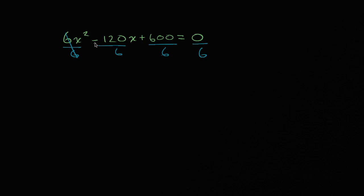On the left-hand side, I am going to be left with x². And then -120 divided by 6, that is, let's see, 120 divided by 6 is 20. So that's -20x. And then 600 divided by 6 is 100. So +100 is equal to 0 divided by 6, is equal to 0.